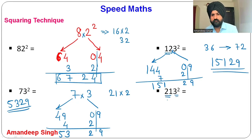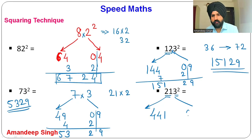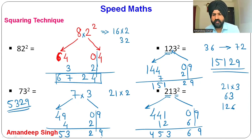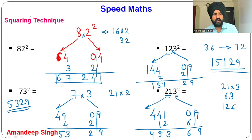For 213²: treat 21 as a single unit. 21² = 441, 3² = 09. 21 × 3 = 63, double = 126 (ignore last digit, write 12). Add: 441 + 12 = 453, bring down 6 and 9. Answer: 45369. This is how you calculate squares of numbers far from 50 or 100.